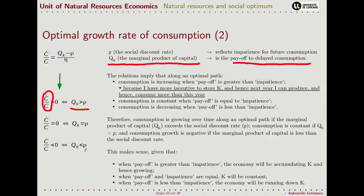Conversely, when my preference for today is higher than what I can get if I renounce consuming today and wait for a higher possibility to produce tomorrow, my growth rate of consumption decreases. And when the two are exactly the same, consumption remains stable. This makes sense: when the payoff is greater than impatience, the economy accumulates capital — storing more than consuming — and hence it grows; the opposite holds for the other case.